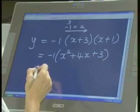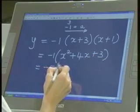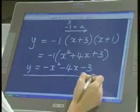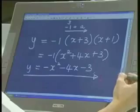So we'll end up with negative x squared, negative 4x, negative 3. Right. That's the equation of the parabola.